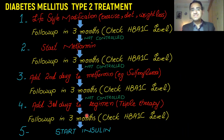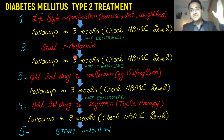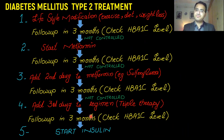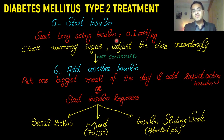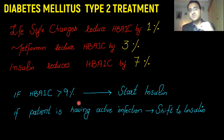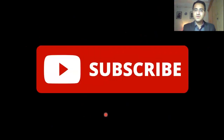In summary: when you diagnose a patient with diabetes, start with lifestyle modification. If not controlled, start metformin. If still not controlled with HbA1c greater than seven percent, add a second drug — mostly sulfonylurea. If still not controlled, add a third drug. If glucose levels are still uncontrolled, start insulin — beginning with long-acting insulin at 0.1 unit per kg, then add rapid-acting or shift to insulin regimens. Lifestyle changes reduce HbA1c by 1%, metformin by 3%, insulin by 7%. If HbA1c is greater than nine percent, start insulin immediately. For active infection, shift to insulin and return to oral medications once infection is treated.